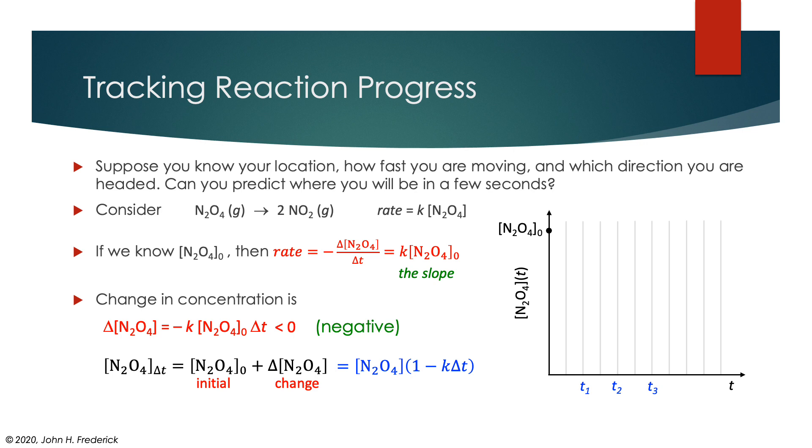The whole point of this derivation is that we know at the initial time what that slope is because it's directly proportional to the concentration of N₂O₄ at that time. If I just follow that slope, basically make a line, and see where it crosses time T₁, that gives me an idea. This is the slope. That gives me an idea of what the concentration will be at that time.